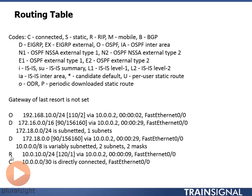Scrolling down further, I have an 'R' here for a RIP route — R stands for RIP at the top of the key. Looking at the brackets, the administrative distance is 120. RIP uses hop count as its metric, so it's one hop — one router — away to reach that network, going out FastEthernet 0/0. I also have a directly connected route. The directly connected route does not list the administrative distance. The 'C' in front indicates it's connected, and directly connected routes always have an administrative distance of 0.